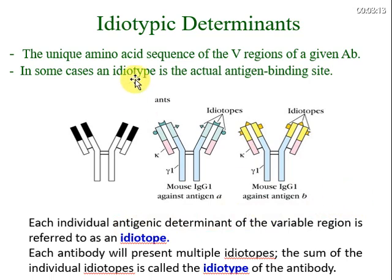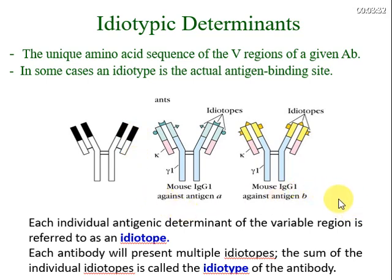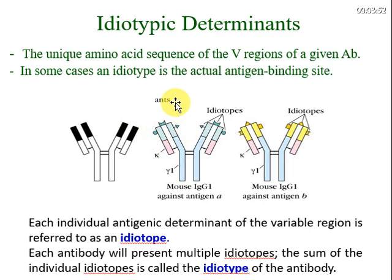Now let us talk about idiotypic determinants, which are present in the variable region. The unique amino acid sequences of the variable region of a given antibody form the idiotypic determinants. In different antibodies within an individual, all antibodies will differ in their idiotypes unless they are monoclonal. Antibodies raised against these idiotypic antigenic determinants are called anti-idiotypic antibodies.